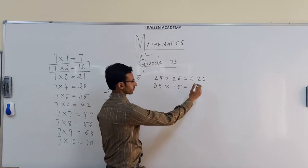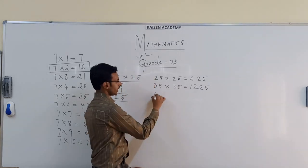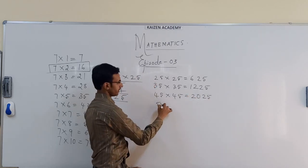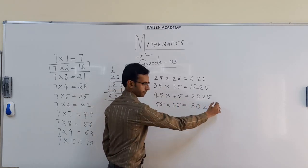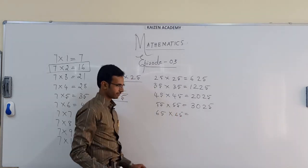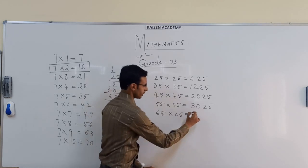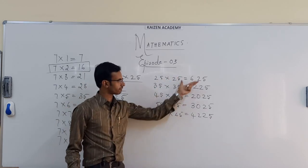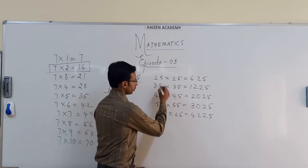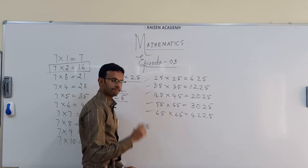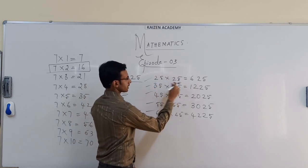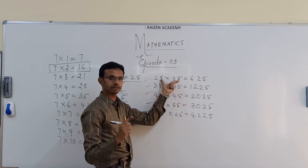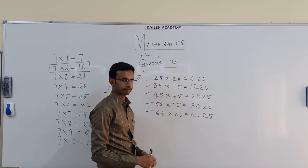1225 is the answer. Again, 45 into 45 gives 2025; 55 into 55 gives 3025; 65 into 65 — your brain might say 4025, but no, it is 4225. By now you might have an idea of the hint or shortcut behind this. The logic is: these numbers are ending with 5, and both numbers are the same. This shortcut can be utilized only when both numbers are the same and both end with 5. The answer will always end with 25.